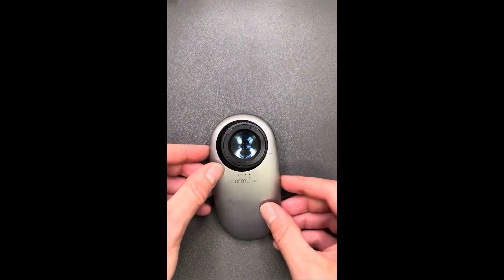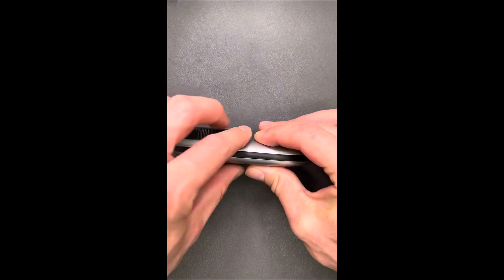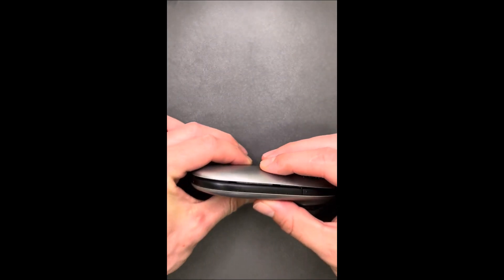You'll then realign the cover and apply gentle downward pressure, continuing along the perimeter until the cover is fully reattached on all sides.